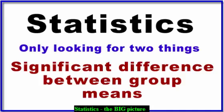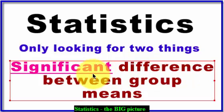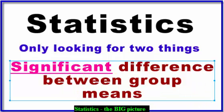The first thing is: is there a significant difference between group means? In other words, do the Los Angeles Chargers, on average, weigh more than the Oakland Raiders? You're looking at the means of two groups and comparing them. There are always differences, but the difference has to be big enough in order for it to be called significant.